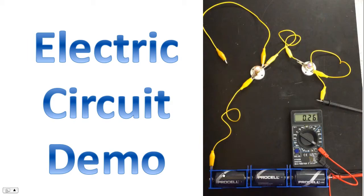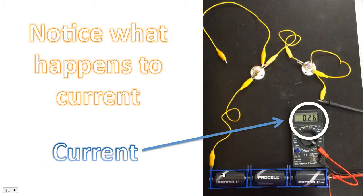Good morning! Today we're going to look at a demonstration involving an electric circuit. Here we have a multimeter that is set to record current. It is measuring the current leaving the battery.